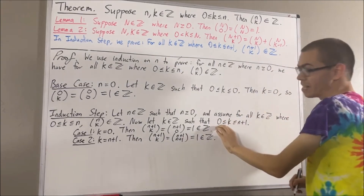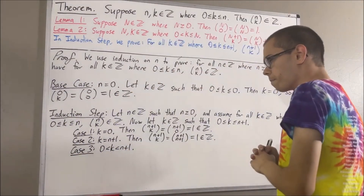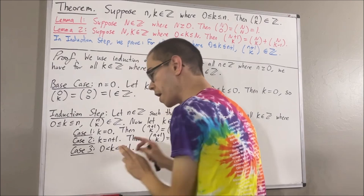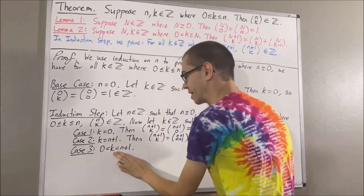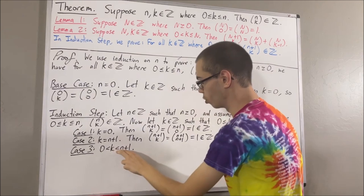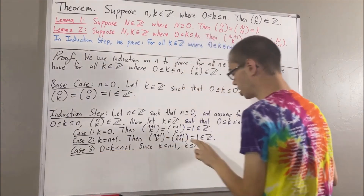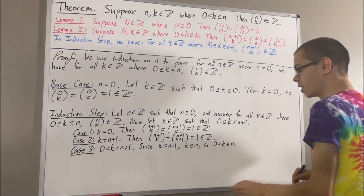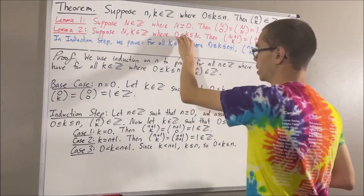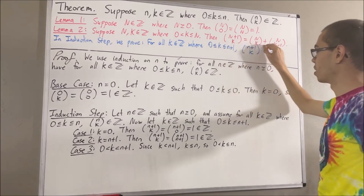Now, let's move on to case 3, where 0 is less than k is less than n plus 1. Well, in this case, since k is less than n plus 1 and these are both integers, it is equivalent to say that k is less than or equal to n. So, we see that 0 is less than k, which is less than or equal to n. And because this inequality is true, this allows us to apply lemma 2, since to apply lemma 2 we needed this inequality to hold. So, we have that n plus 1 choose k is equal to n choose k plus n choose k minus 1.